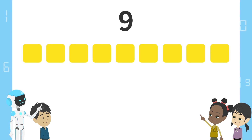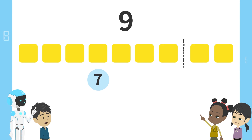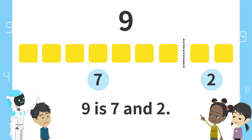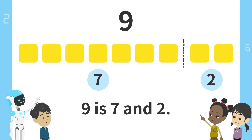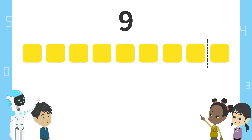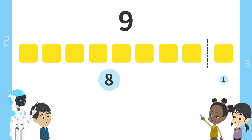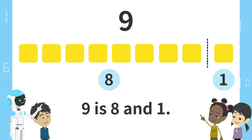Next, here. Seven blocks on the left and two blocks on the right. Nine is seven and two. Finally, here. Eight blocks on the left and one block on the right. Nine is eight and one.